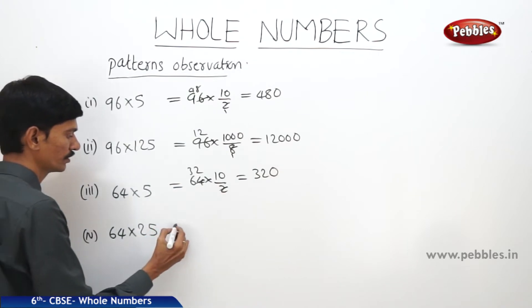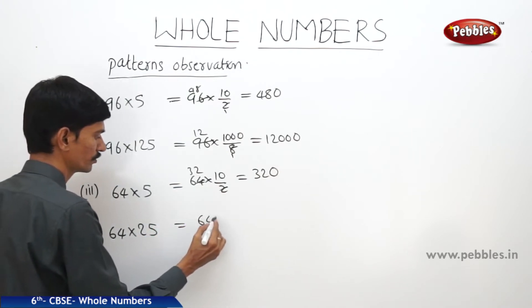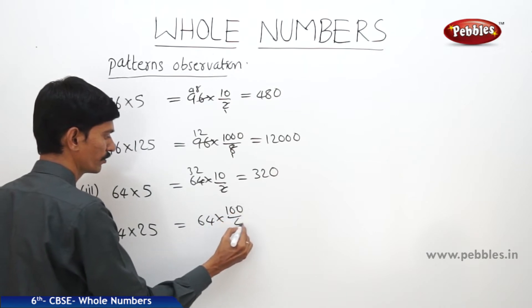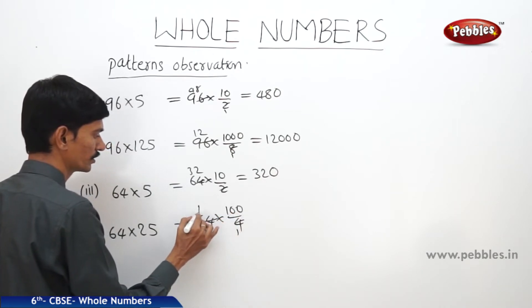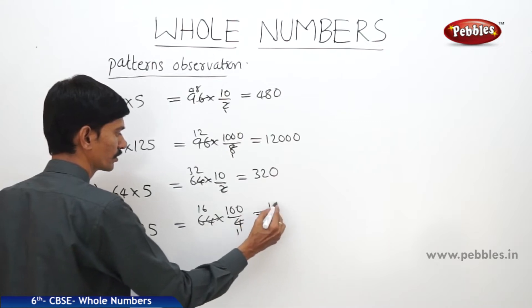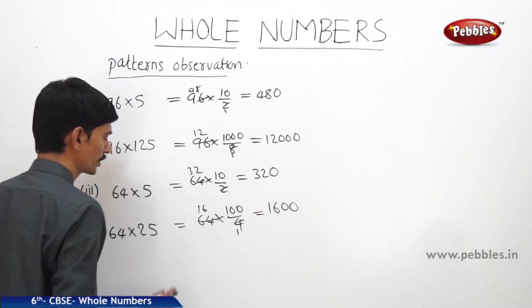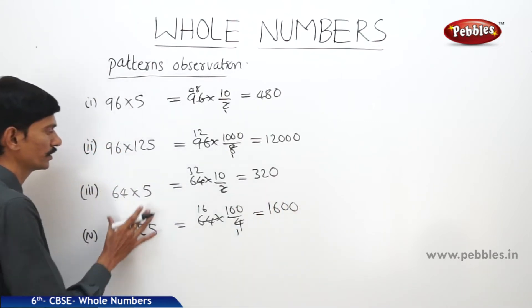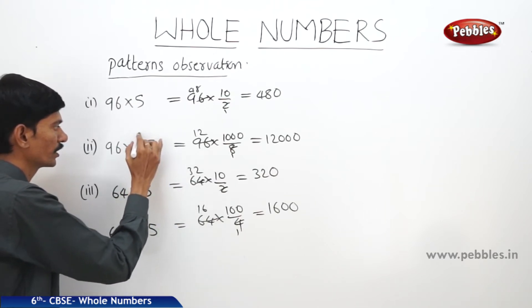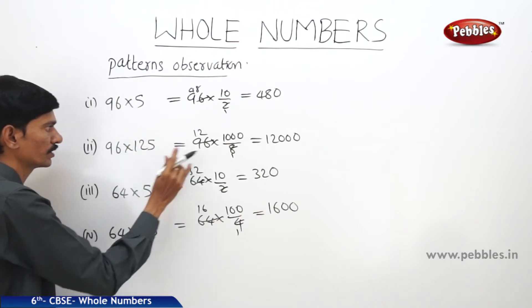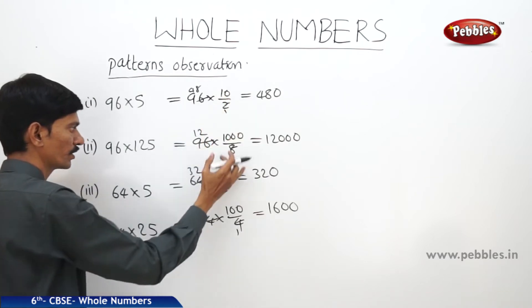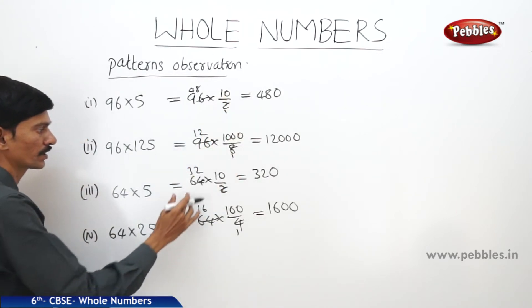For 64 into 25, this equals 64 into 100 divided by 4, so 16 into 100 is 1600. We can multiply any two numbers by writing one of the two numbers in the form of 10 divided by something or 1000 divided by something, and then cancel and multiply by ten, hundred, or thousand.